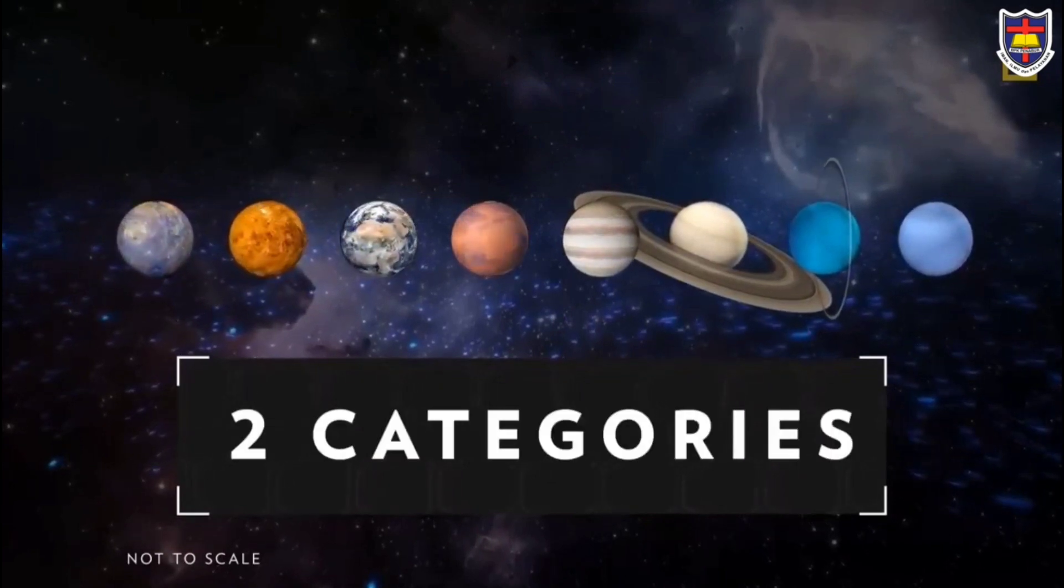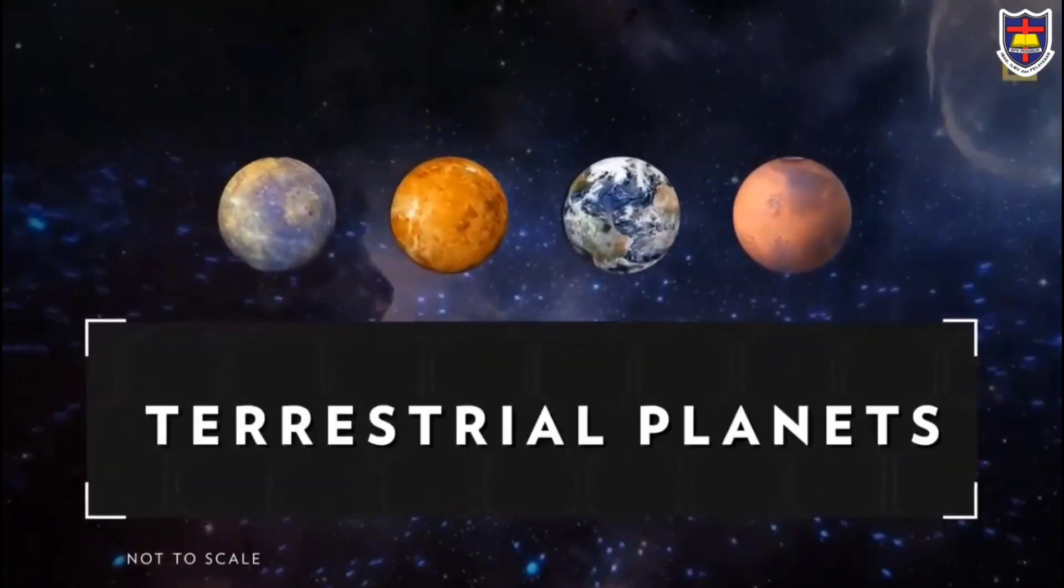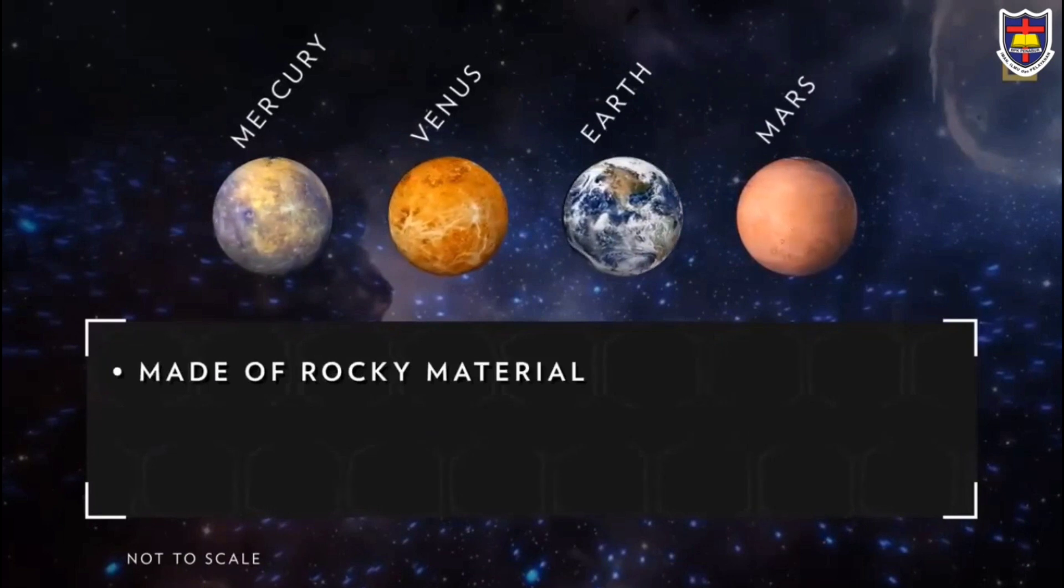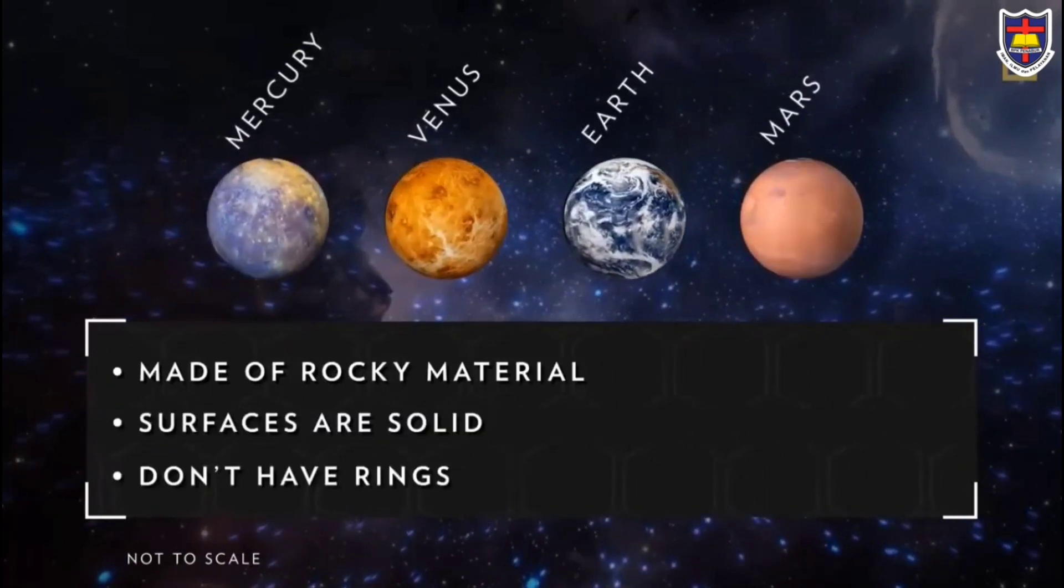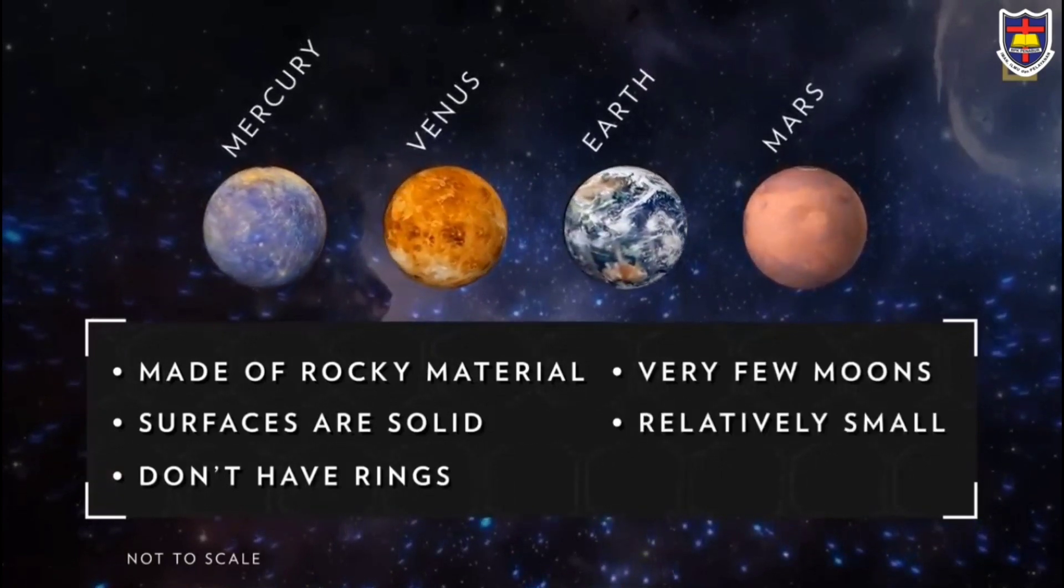The planets are divided into two categories based on their composition: terrestrial and Jovian. Terrestrial planets, including Mercury, Venus, Earth, and Mars, are primarily made of rocky material. Their surfaces are solid, they don't have a ring system, they have very few or no moons, and they are relatively small.